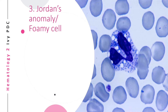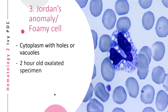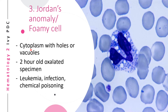The next type of cell is Jordan's anomaly, also known as the foamy cell. The cytoplasm has holes or vacuoles — clear spaces — giving it a foamy appearance. This happens if a two-hour-old oxalated specimen is used to make a smear. It may be seen in leukemia, infection, or chemical poisoning.